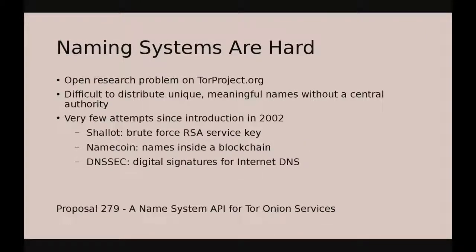The problem with this is that naming systems are hard. This has been an open research problem on TorProject.org for several years. It's very difficult to distribute unique and meaningful names without one central authority. One approach is shallot, which simply regenerates an RSA key over and over until you have a desirable noun at the beginning of the name. Facebook brute-forced the name 'facebookcorewww.onion' this way, but this approach only works for eight or nine characters before it becomes too large to brute force.